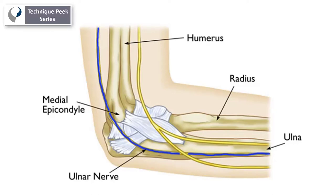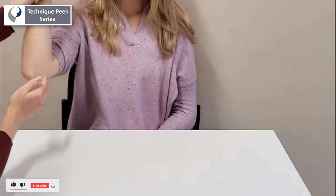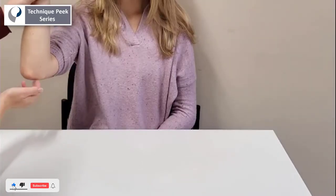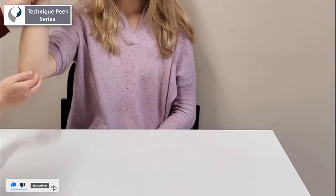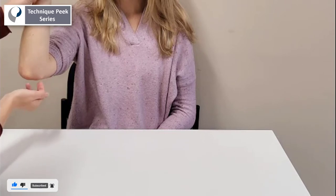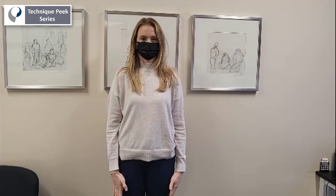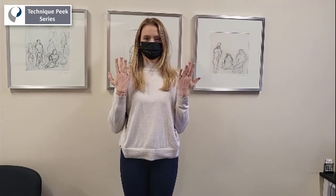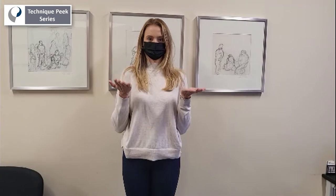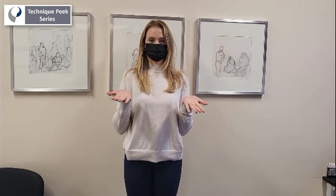Cubital tunnel is a compression of the ulnar nerve at the level of the elbow on the medial side. Provocative testing can include percussion at the posterior medial aspect of the elbow, or compression via elbow flexion with forearm supination and wrist extension.